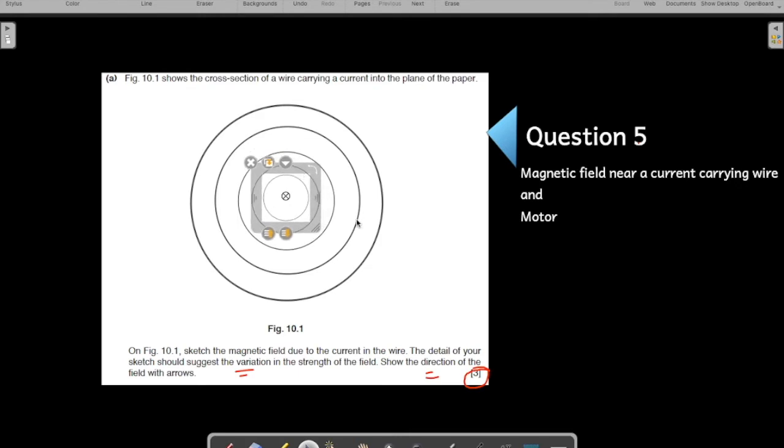The circles are close together where they are near the wire, spacing between the circles is close and it is getting increased. The spacing is getting increased slowly and steadily. So, that is one thing we have shown and also show the direction. You have to show the direction. How do you find the direction of the magnetic field? You use the right hand thumb rule.